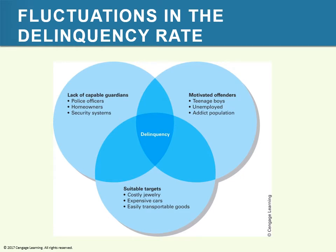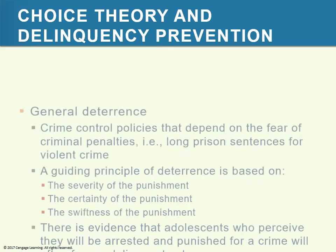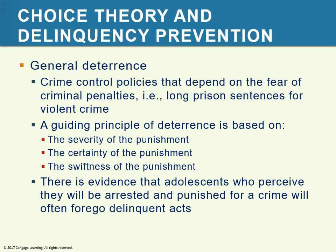In the darker blue sections is where those three areas interact, and the darkest area is where delinquency occurs. How can we prevent delinquency from choice theory?